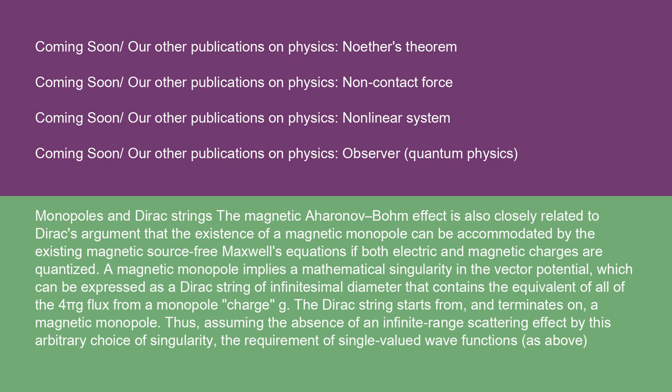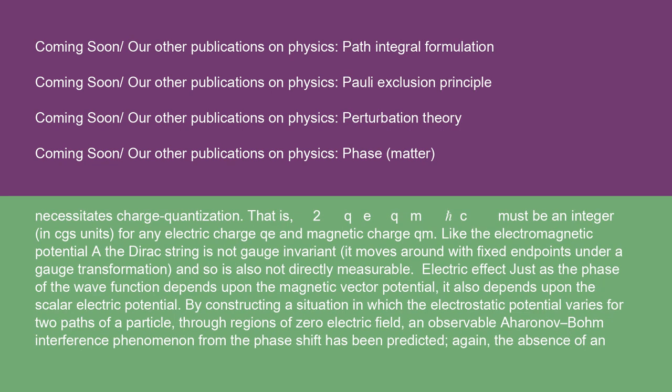Monopoles and Dirac strings: The magnetic Aharonov-Bohm effect is also closely related to Dirac's argument that the existence of a magnetic monopole can be accommodated by the existing magnetic source-free Maxwell's equations if both electric and magnetic charges are quantized. A magnetic monopole implies a mathematical singularity in the vector potential, which can be expressed as a Dirac string of infinitesimal diameter that contains the equivalent of all of the 4πg flux from a monopole charge g. The Dirac string starts from and terminates on a magnetic monopole. Thus, assuming the absence of an infinite range scattering effect by this arbitrary choice of singularity, the requirement of single-valued wave functions, as above, necessitates charge quantization. That is, 2Q_EQ_M/ℏc must be an integer in CGS units for any electric charge Q_E and magnetic charge Q_M. Like the electromagnetic potential, a Dirac string is not gauge invariant. It moves around with fixed endpoints under a gauge transformation, and so is also not directly measurable.